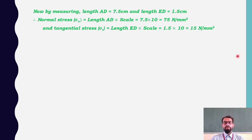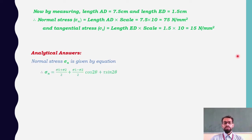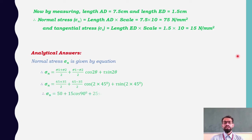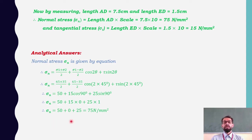Now verifying analytically: the normal stress formula is sigma_n = (sigma1 + sigma2)/2 + (sigma1 - sigma2)/2 · cos2θ + tau · sin2θ. Substituting all values and simplifying, sigma_n = 75 N/mm², which exactly matches the graphical result.